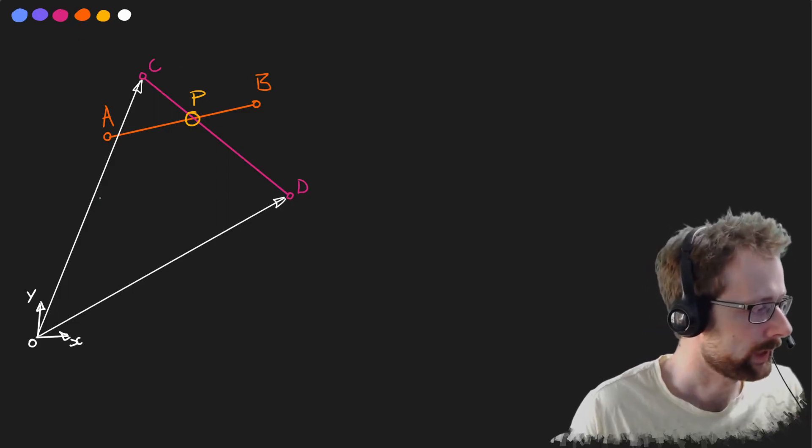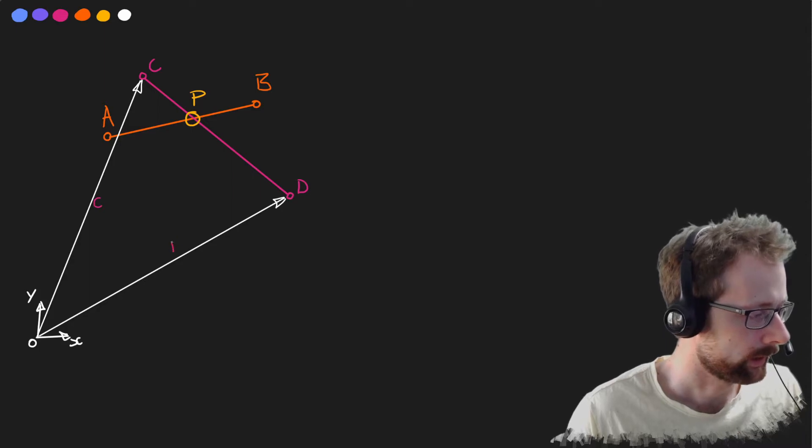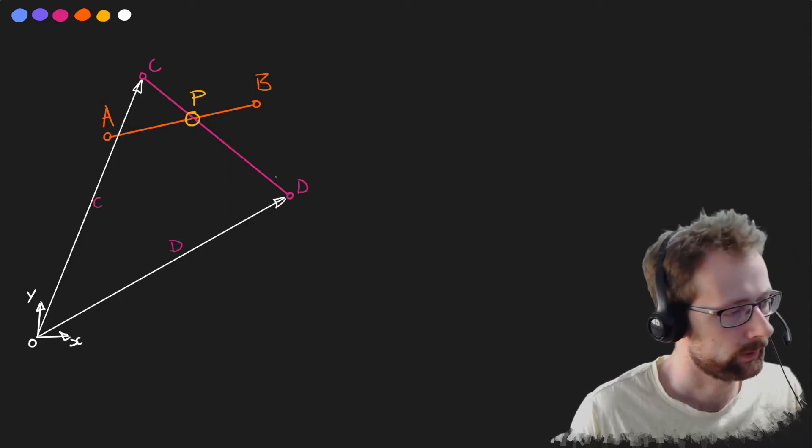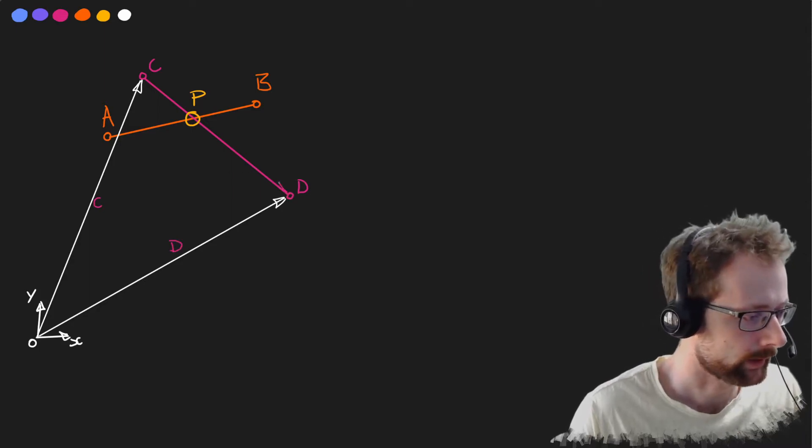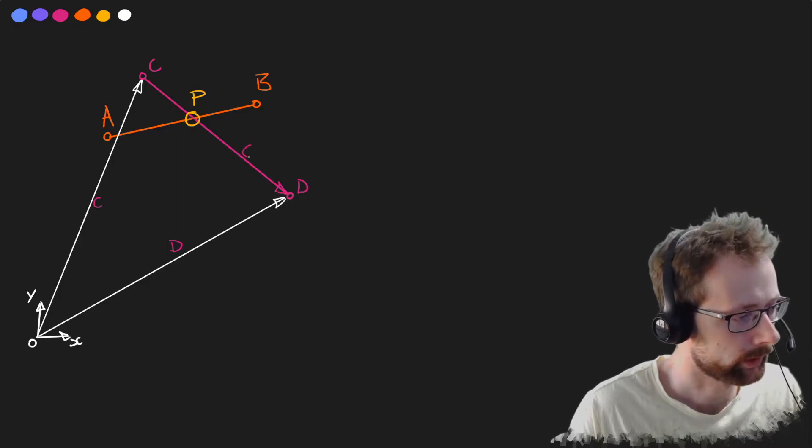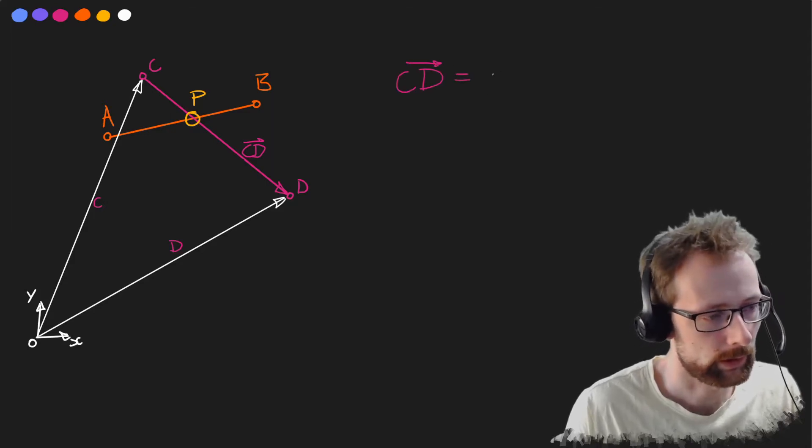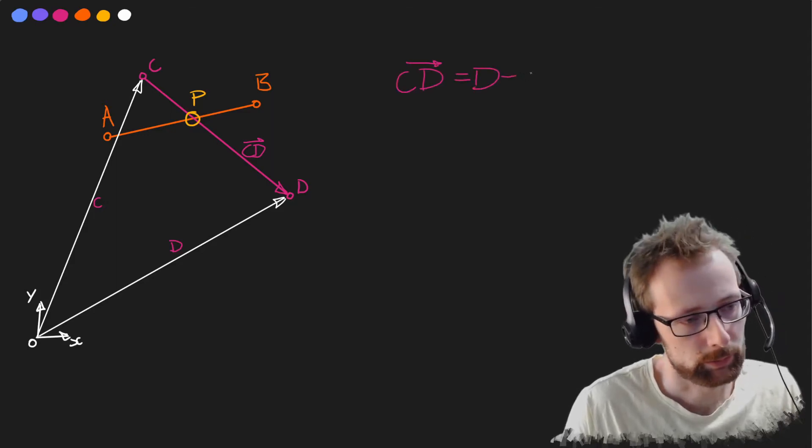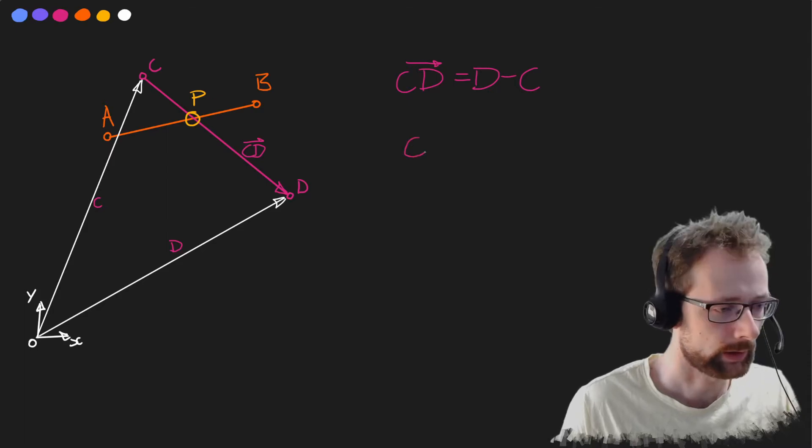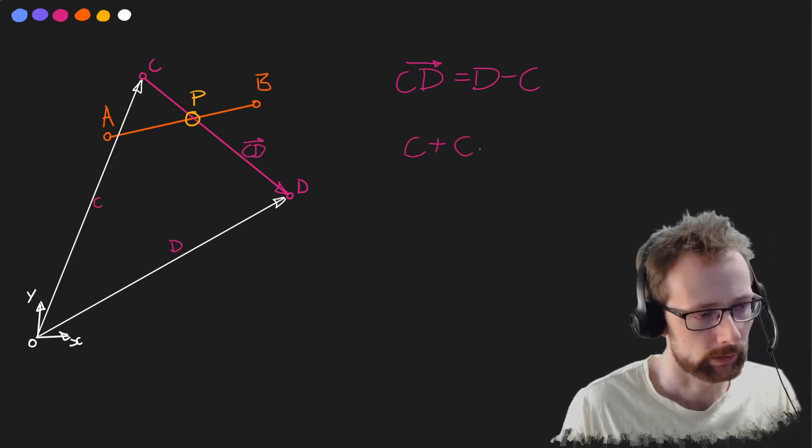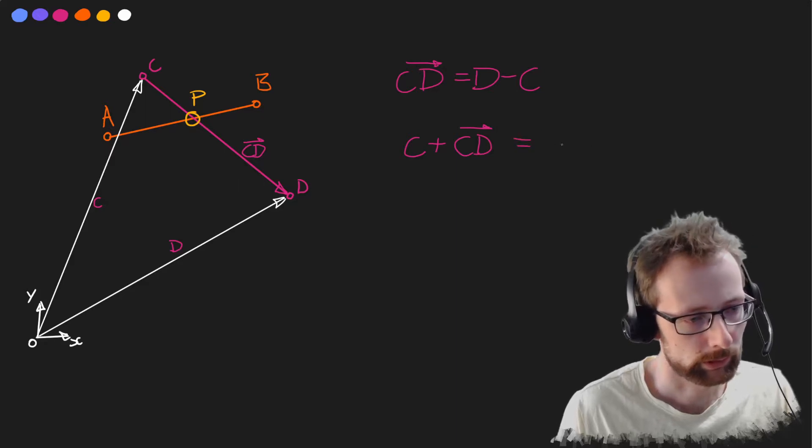So in reality c is this vector here, d is this vector here, and this purple line we can call that cd. We can give it a direction and call it cd. To calculate cd we can say that it's equal to d subtract c. If I take c and I add cd like so we're going to get to d.